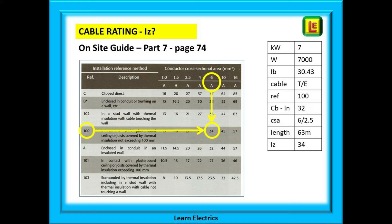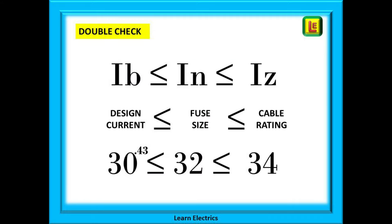Now we have all the information for our shower. A 7 kilowatt shower will draw 30.43 amps. We will use a 32 amp breaker. The cable will take 34 amps and must not exceed 63 metres in length. A quick double check: putting the numbers into IB, IN and IZ — 30.43 is less than 32, and 32 is less than 34. Everything is correct, the job is okay.